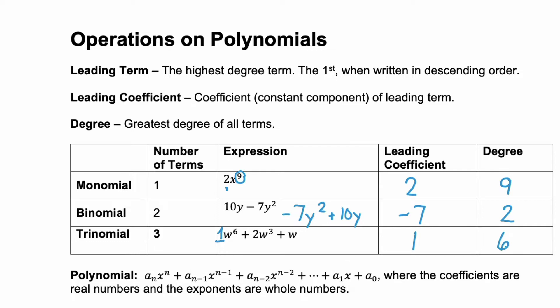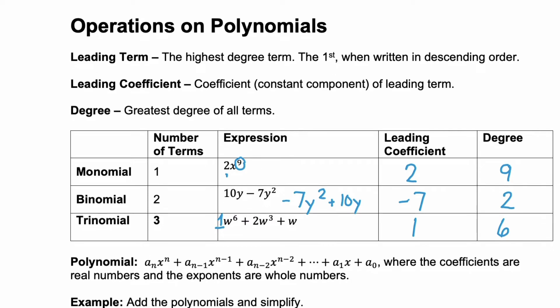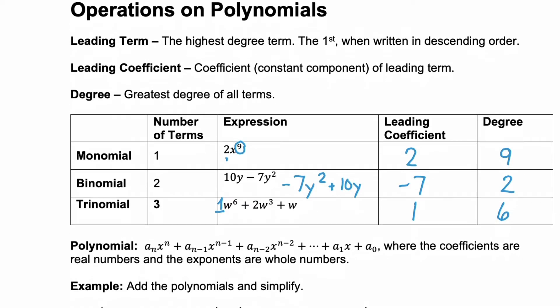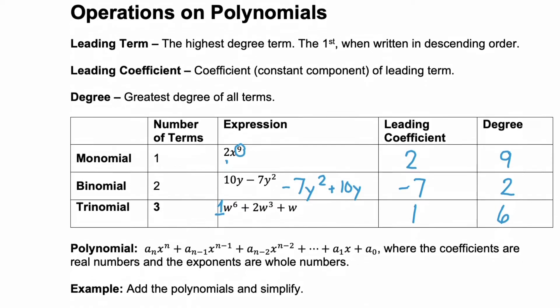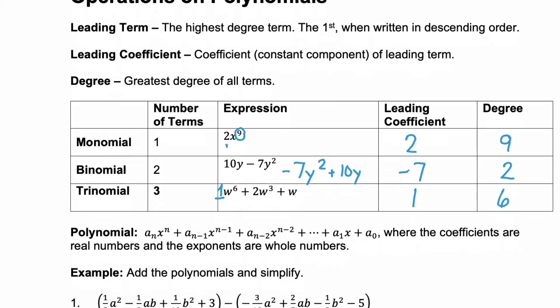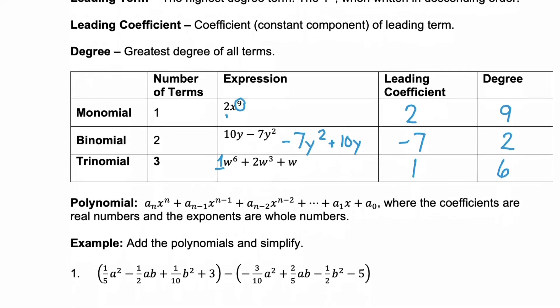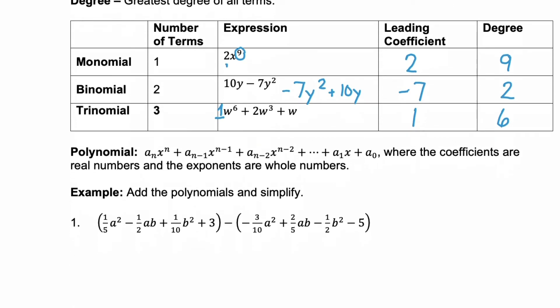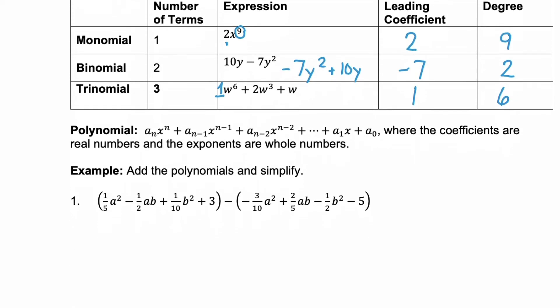Polynomials are similar to these monomials, binomials, and trinomials — actually these are all types of polynomials. Poly just means multiple, so there are more terms. You can see a polynomial that has four terms or five terms.